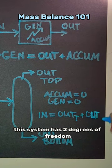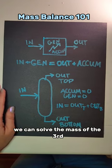This system has two degrees of freedom, so if we specify the mass of two streams, we can solve the mass of the third.